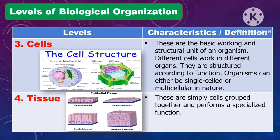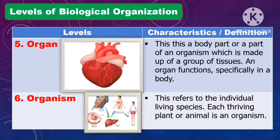Another level of biological organization is tissue. Tissues are simply cells grouped together that perform a specialized function. Another level is the organ. An organ is the body part or part of an organism made up of a group of tissues, and it functions specifically in the body.